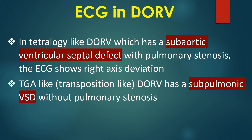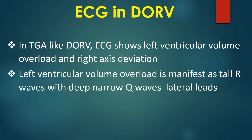TGA-like DORV has a sub-pulmonic VSD without pulmonary stenosis. In TGA-like DORV, the ECG shows left ventricular volume overload and right axis deviation. Left ventricular volume overload is manifest as tall R or with deep narrow Q waves in lateral leads.